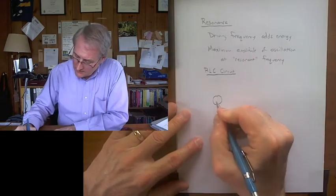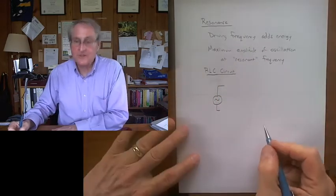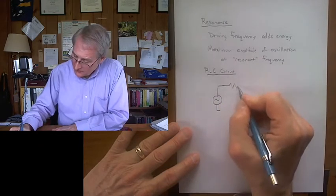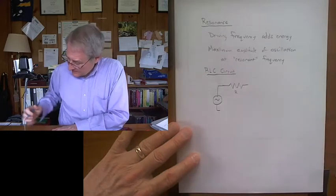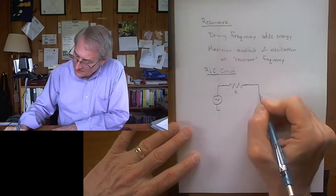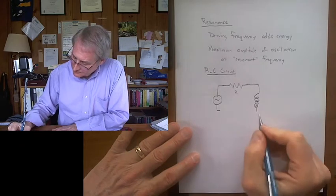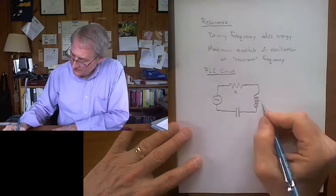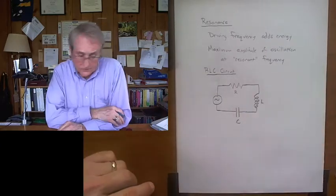So we'll take the function generator and make some oscillations. And we're going to put in a resistor. There's always resistance, so we'll put some in. Not too much. I think we're only using 22 ohms in this circuit. And then some L, the induction coil. And then some C, some capacitance. And this is in series. And that's our circuit right there, RLC.